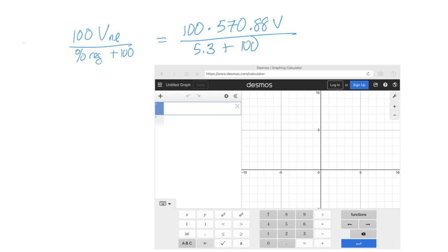So if I have to do that thing with a fraction, so 100 times 570.88, and then I want to close that top stuff, so I'm just going to hit a close bracket, and then go divide, 5.3 plus 100.